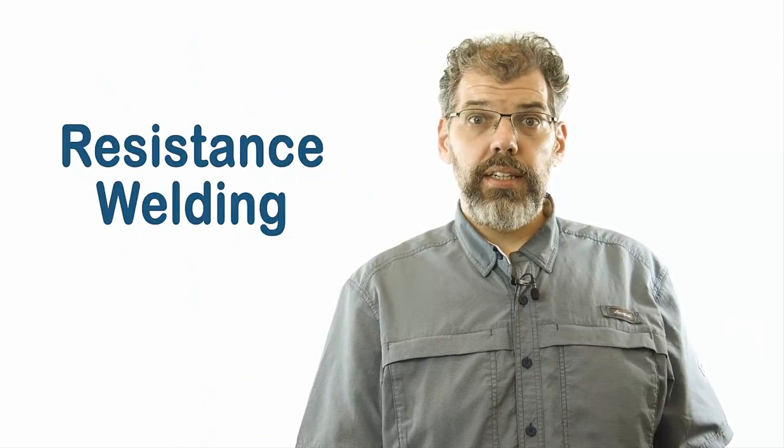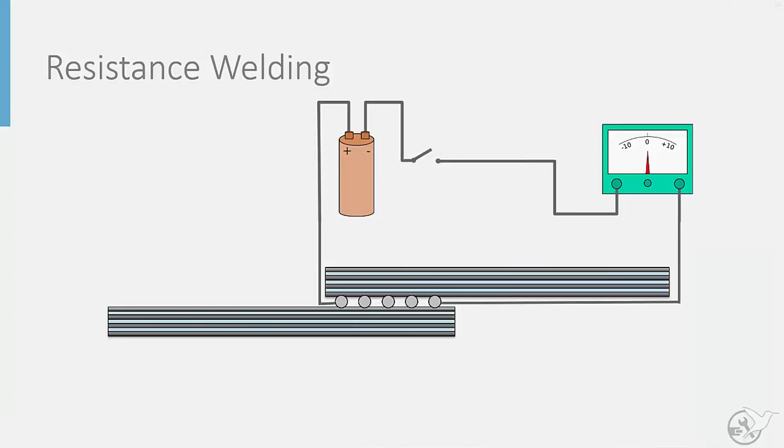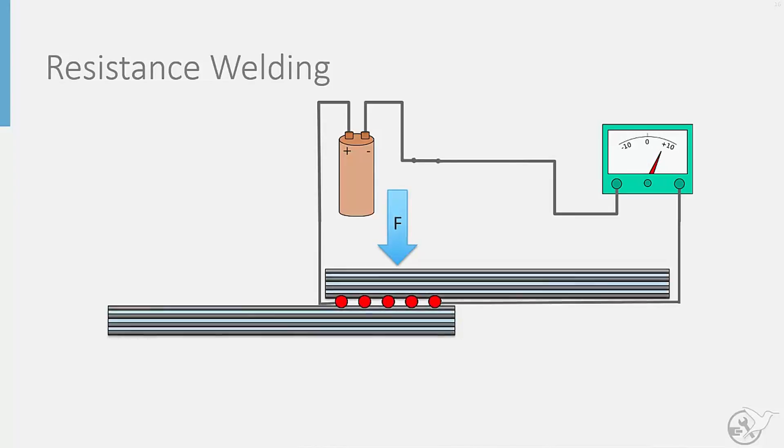The first welding technique is known as resistance welding. This technique uses a conductive layer, such as a metal mesh, to melt the composite parts, welding them together. Here we can see the metal mesh embedded between the parts to be joined. An electrical current is applied to heat up the mesh and a force is applied, bringing the parts together.